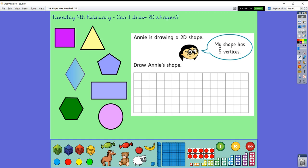Now we've got Annie and she's drawing her shape. Have a think, which shape, using these clues, has Annie drawn? And can you have a go at drawing Annie's shape? My shape has five vertices.